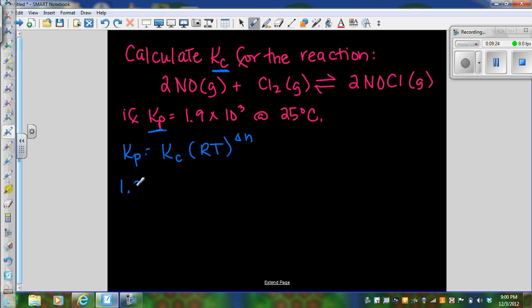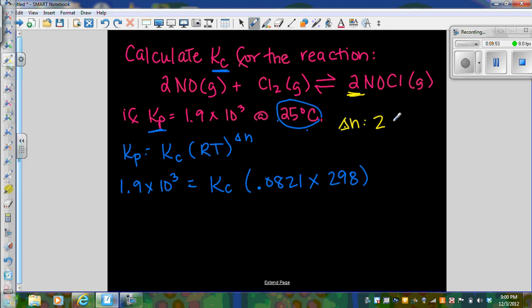So Kp is 1.9 times 10 to the third, that equals Kc which we are calculating times R which is 0.0821 times temperature 25 degrees Celsius plus 273 is 298. Now to calculate our change in the number of moles, delta n is going to be final 2 minus our initial, and because we have two reactants we have to add these together, so 1 and 2 is 3, so 2 minus 3 gives us a negative 1. So we are going to raise this to the negative 1 power.